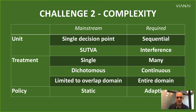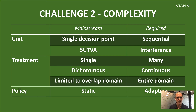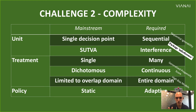That use case represents a broader challenge around what I might call complexity. In many cases, we see a gap between the current state of technology in causality and what our customers would like to do. For example, unit definitions are usually treated as a single decision point, but many decisions are sequential. We usually assume SUTVA, but real life has interference. We like treating single dichotomous treatments, but real life has many continuous treatments. We like limiting to the overlap domain, but customers want to extrapolate over the entire domain. Policies also need to adapt. Technical solutions exist for almost every one of these challenges, but they are not as mature as solutions to mainstream types of challenges.